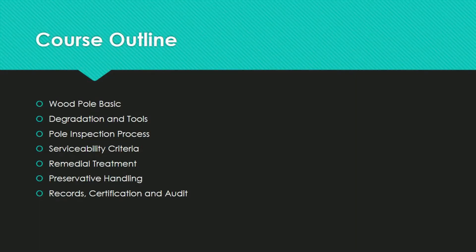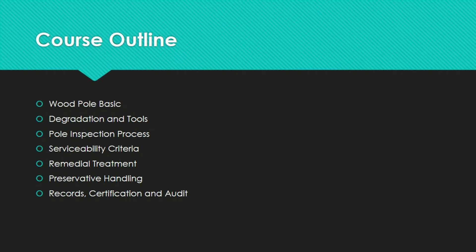Now let us look at the course outline for the Power Utility Wood Pole Inspection Fundamentals course. We would first start off with this particular video, which is our Wood Pole Basics section. Then we will look at Degradation and Tools — basically the different modes of degradation for wood poles, as well as the tools that you will need to conduct the pole inspection process. Moving on, we will look at the actual pole inspection process. After that, we will look at the various serviceability criteria for wood poles, as well as any of the remedial treatments that you can apply to the wood poles.